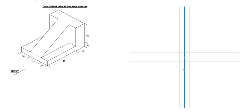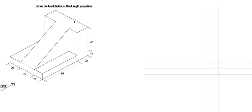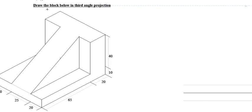Welcome back to Griftec Drawings. In this tutorial I'm going to show you how to draw an object in orthographic projection, to be specific third angle projection. As you can see, you already have a block and the question states: draw the block below in third angle projection.